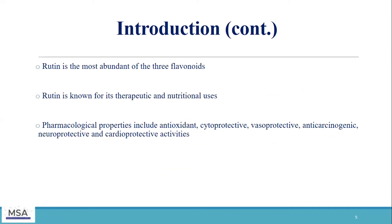Our main focus will be on rutin, which is the most abundant of the three flavonoids and is highly bioavailable. It is also known for its therapeutic and nutritional uses, and it holds a variety of pharmacological properties, which include antioxidant activities, cardioprotective activities, anti-carcinogenic, and many more.